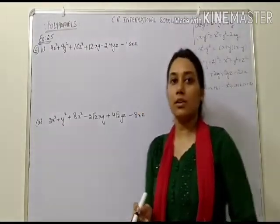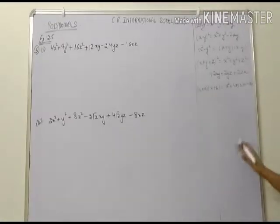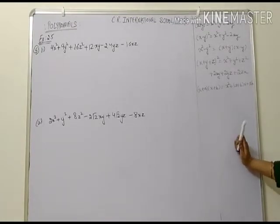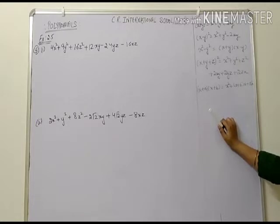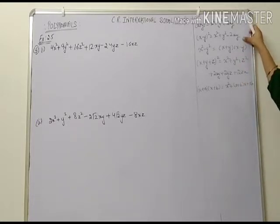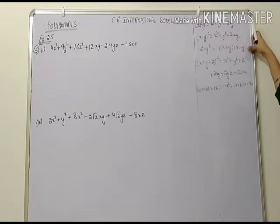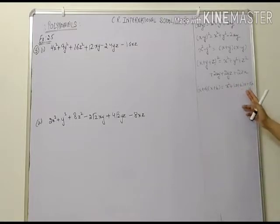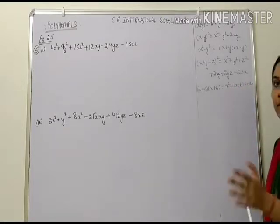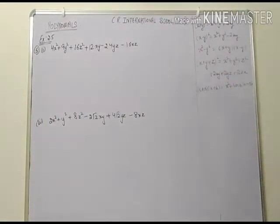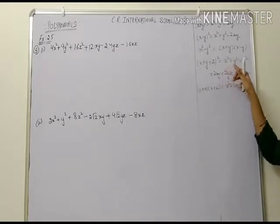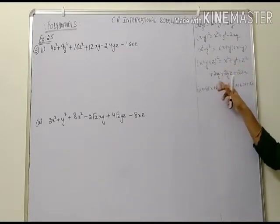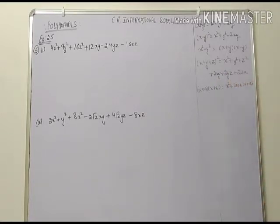Good morning students. Welcome to online classes of Siyah International School. Let's continue our exercise 2.5. We have studied: x plus y whole square equals x square plus y square plus 2xy; x minus y whole square equals x square plus y square minus 2xy; x square minus y square equals x plus y into x minus y; x plus a into x plus b equals x square plus a plus b times x plus ab; and x plus y plus z whole square equals x square plus y square plus z square plus 2xy plus 2yz plus 2zx.